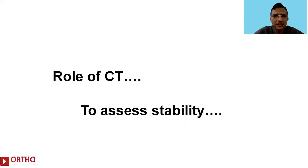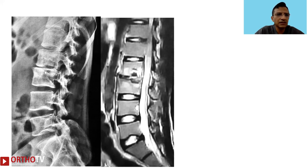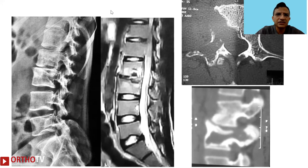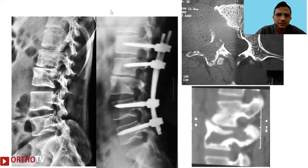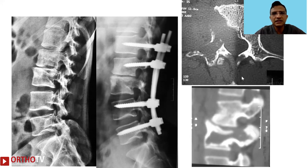Coming to CT scan — it is used primarily to assess stability, which is what spine surgeons are most interested in. Here is an illustrative case: a patient with a mid-lumbar lesion with some disc space collapse. The MRI looked acceptable, but the CT scan revealed significant osteolysis with one facet completely destroyed — clearly qualifying as an unstable lesion. The patient was severely symptomatic, unable to move in bed, and required surgical intervention.